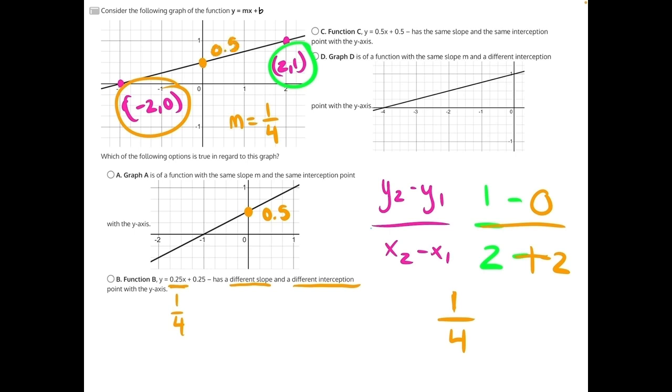And it has the same slope as our original function, yet it's saying different slope, different interception point. So b overall is incorrect.